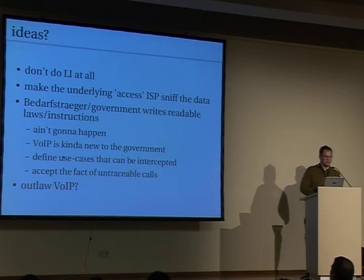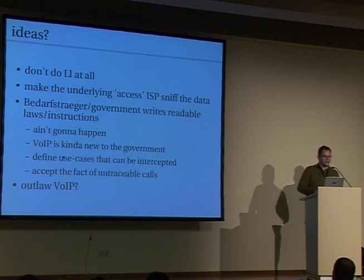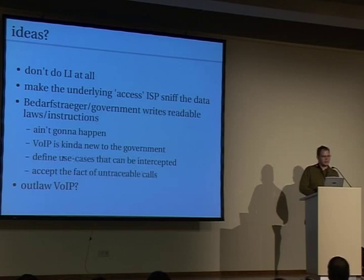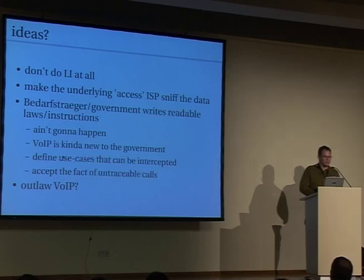So any ideas so far? Don't do law of interception at all? That won't work. One interesting approach: voice over IP is not just a PSTN replacement but a service on top of your access ISP. So just make your underlying access ISP — like Deutsche Telekom if you've got DSL access — sniff the data and copy it to the law enforcement agency, since both signaling and voice data would be in there. But voice over IP ISPs are trying to make voice over IP a real replacement for PSTN. So we also have to take care of all the law enforcement things if we want to replace PSTN — we have to have all the means in place to provide the same access to the data.